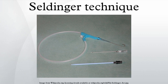The desired vessel or cavity is punctured with a sharp hollow needle called a trocar, with ultrasound guidance if necessary. A round-tipped guide wire is then advanced through the lumen of the trocar, and the trocar is withdrawn.